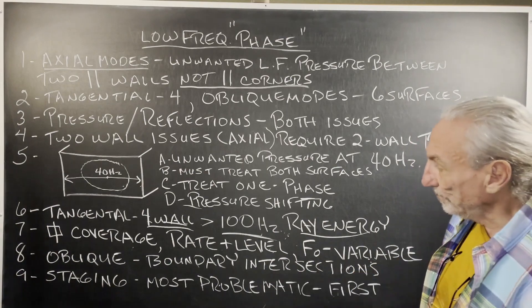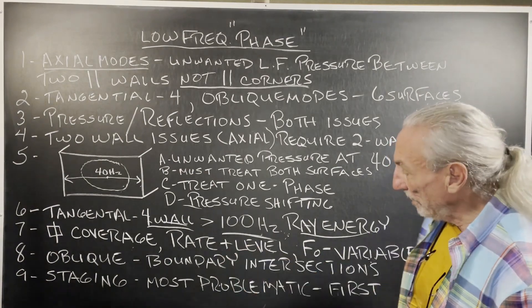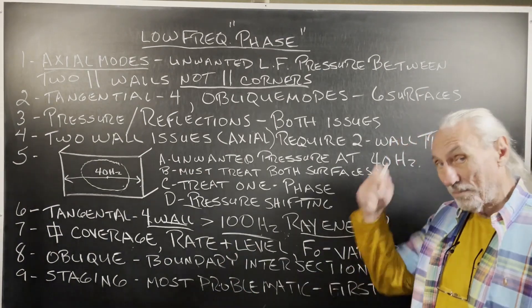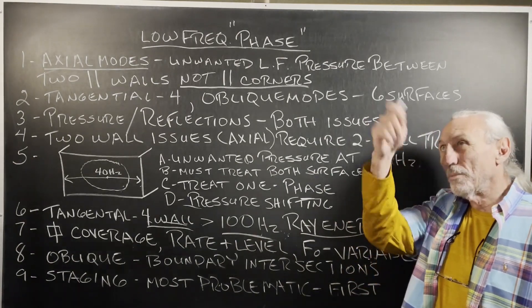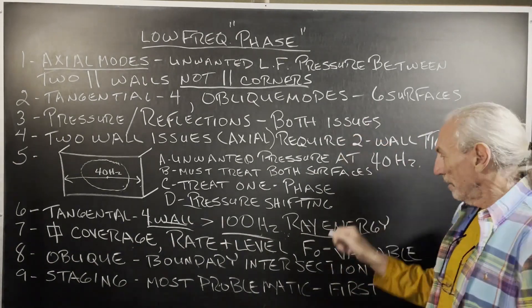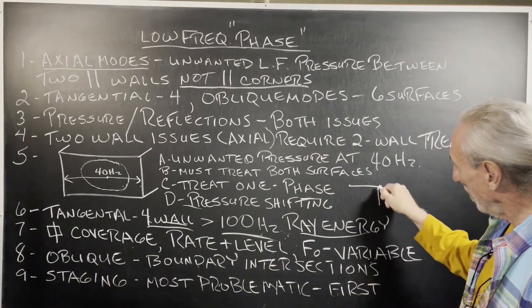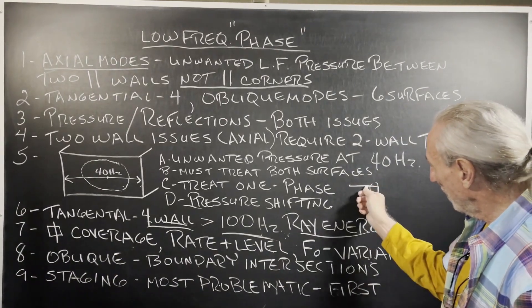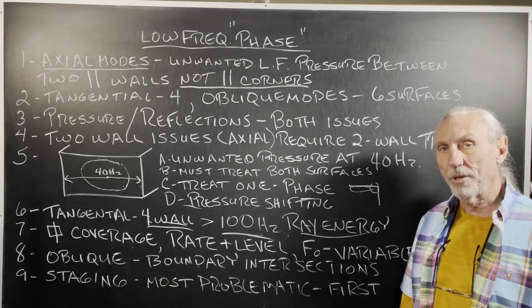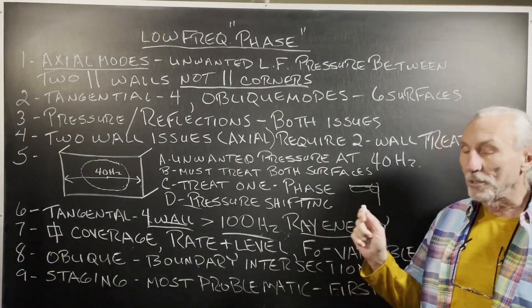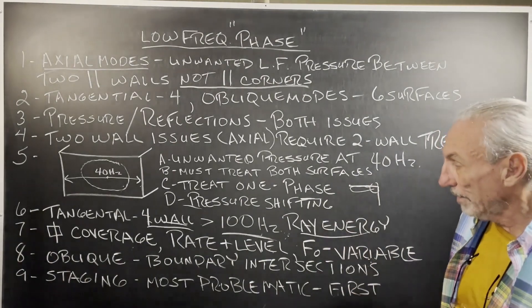Staging. The obliques — let's talk about those. That's six planes. We really treat those at the room boundary surfaces: the ceiling-to-sidewall area, and these corner areas for oblique modes. We focus on axial and tangential first, and then we go from there.